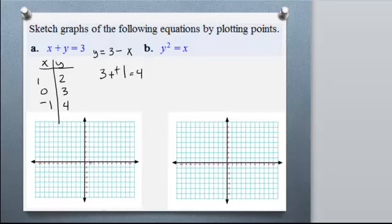Plot these three points. We have (1, 2). We have (0, 3). So we go 0, 3.